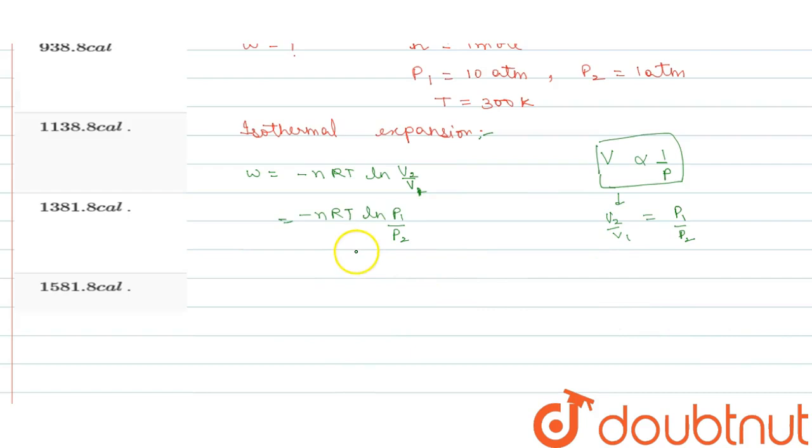We have to put all the values. First we have minus, number of moles 1 mole, R value gas constant 2, multiply temperature 300, LN P1 value 10, P2 value 1.